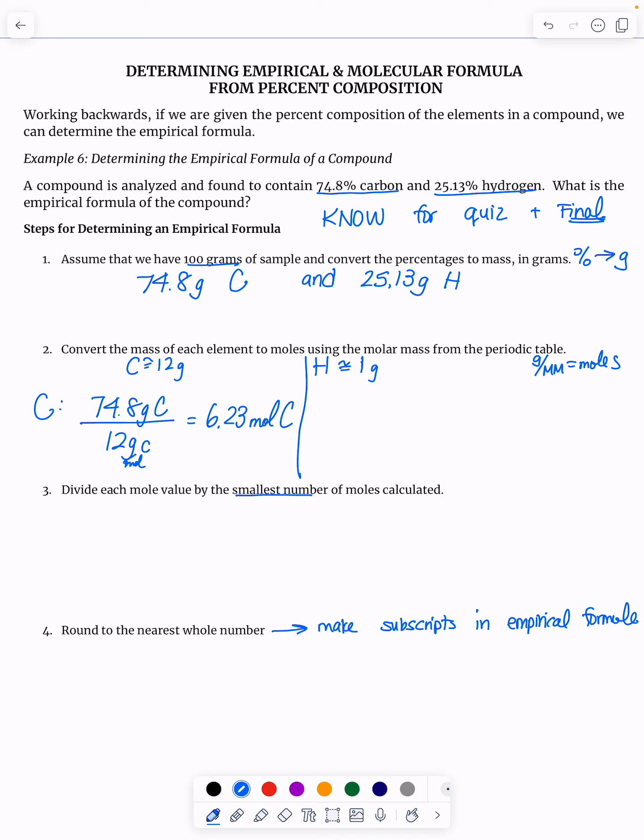And then for hydrogen, I'm going to take, there are 25.13 grams of hydrogen. And I'm going to divide by one gram per mole of hydrogen. And I get 25.13 moles of hydrogen.